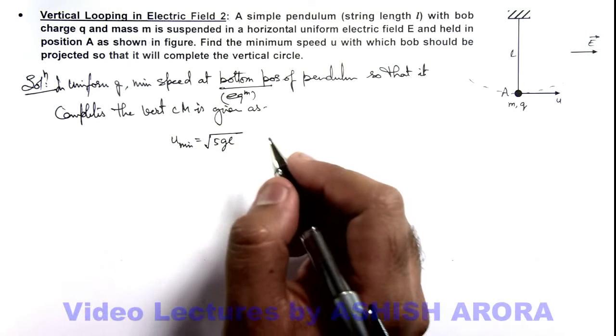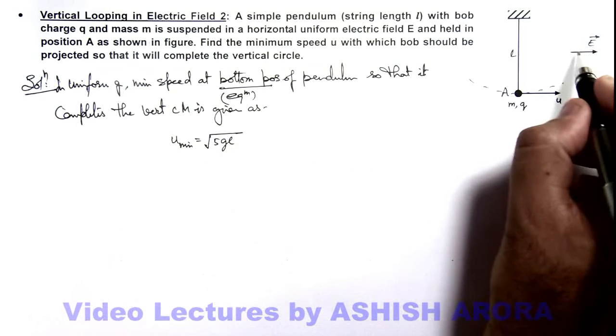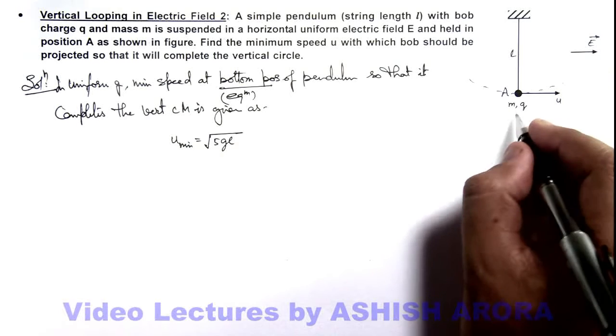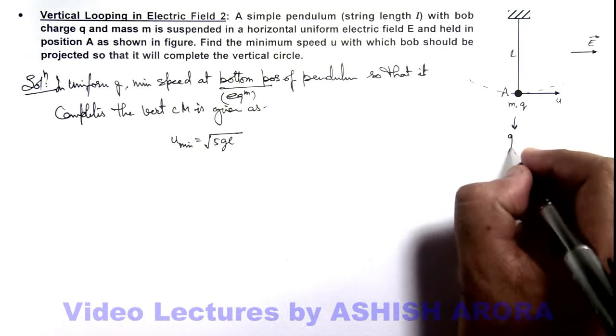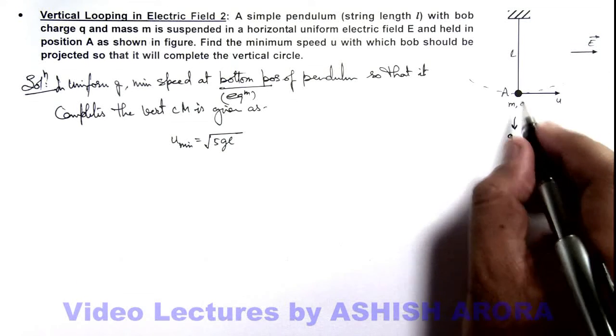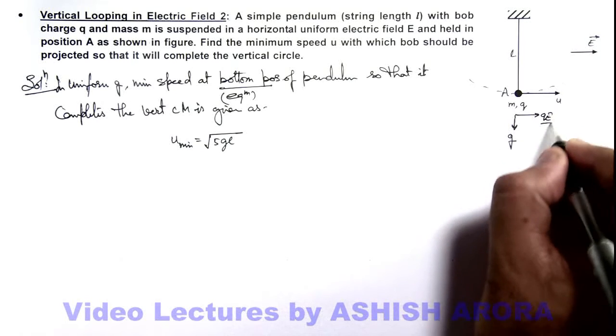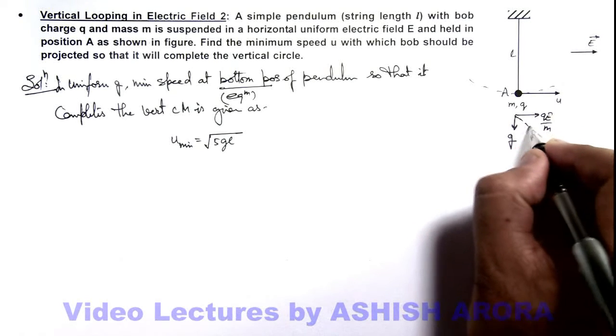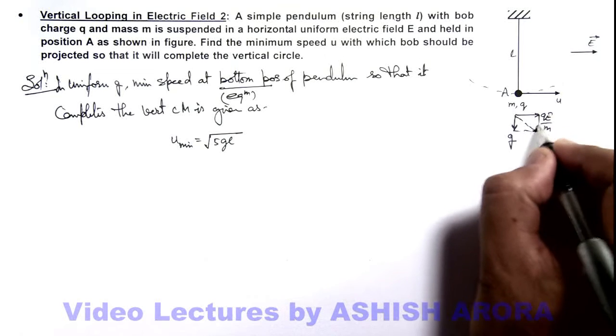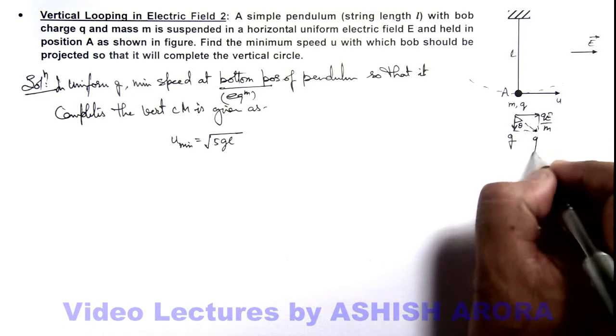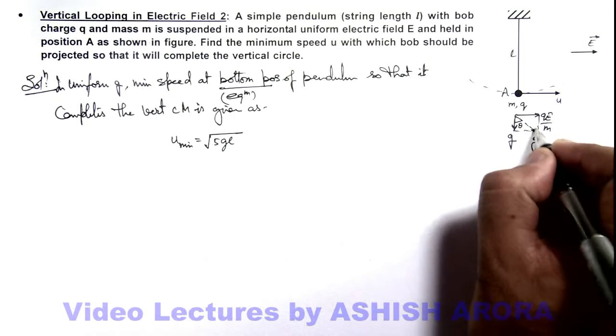Now in this situation here we can see electric field is in horizontal direction and g is acting in downward direction. So it'll be experiencing 2 accelerations, one is g and other is qE by m. And the resultant of the 2 would be in this direction at an angle say theta which we can consider as the effective gravity acting on it.